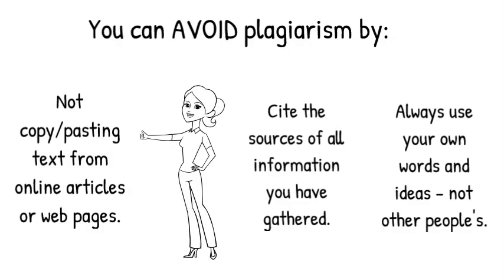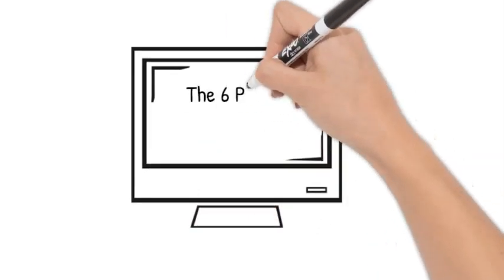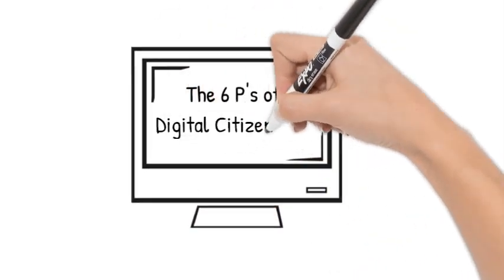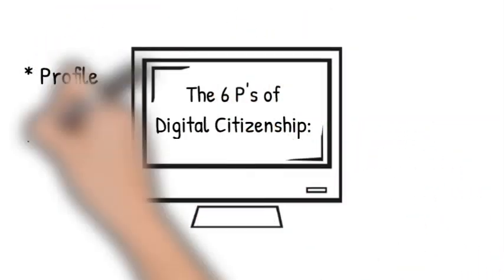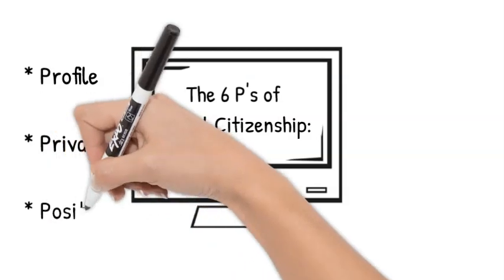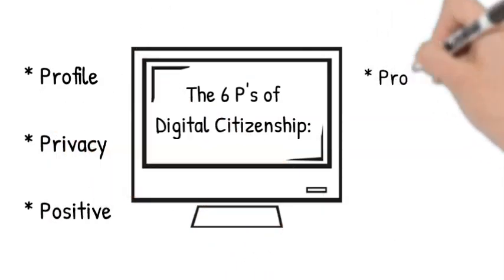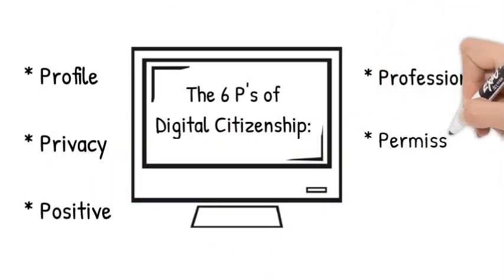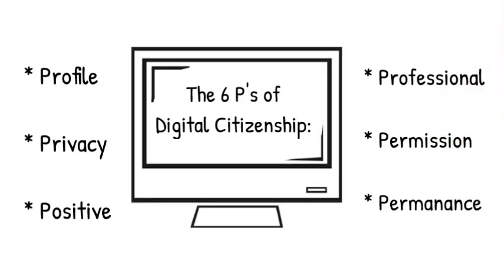Now we come to the six P's of digital citizenship: profile, privacy, positive, professional, permission, and permanence.